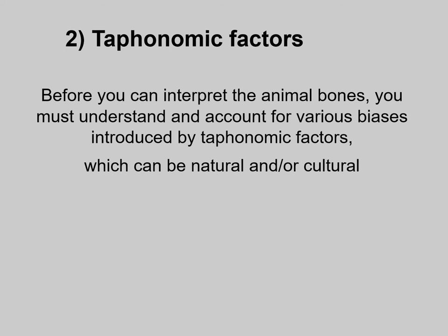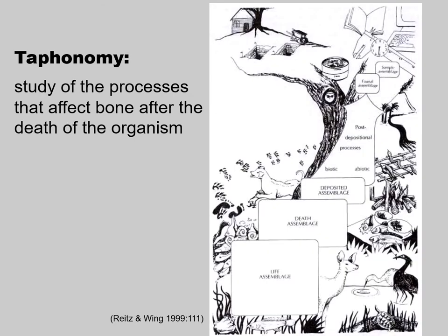Before you can interpret the animal bones, you must understand and account for various biases introduced by taphonomic factors, which can be either natural and/or cultural in origin. Taphonomy is the study of the processes that affect bone after the death of the organism. This illustration shows going from the life assemblage to the death assemblage to what gets deposited, and then what are the biotic and abiotic post-depositional factors that affect those bones, ending with the archaeological assemblage and what you recover.